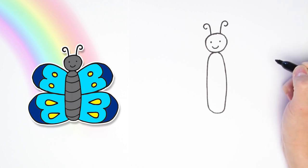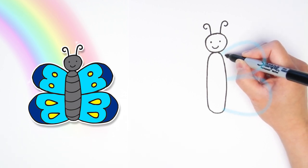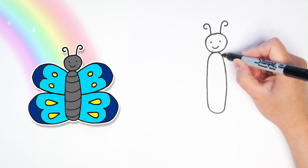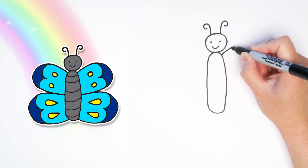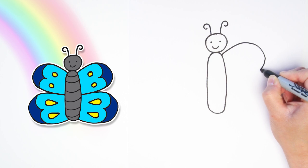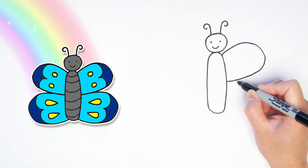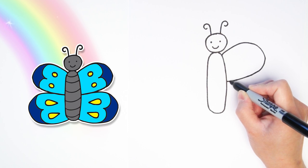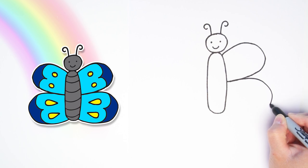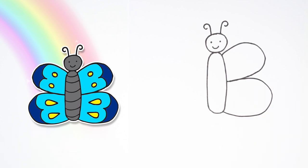Next, we're going to imagine a big number three. These are going to be the wings on the right side. First, we're going to do one big bump on this side, almost like a circle shape. And then we're going to do another big bump right below it. Almost like another circle shape. Do you see how we made a big number three?